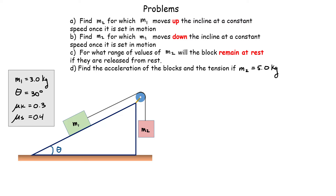For the first problem, I want to find the value of m2 for which block m1 moves up the incline at constant speed once it is set in motion. A couple of key words: it moves up the incline at constant speed once set into motion. This means we use kinetic friction, and since the speed is constant, the acceleration of both blocks has to be equal to zero — this is really a Newton's first law problem.